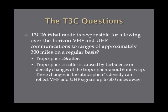What mode is responsible for allowing over-the-horizon VHF and UHF communications to ranges of approximately 300 miles on a regular basis? The answer is tropospheric scatter. Tropospheric scatter is caused by turbulence or density changes, so a high-pressure pocket of the troposphere about six miles up. These changes in the atmosphere's density can reflect VHF and UHF signals up to 500 miles away. Just remember, tropospheric scatter will scatter VHF and UHF frequencies up to 300 miles away.